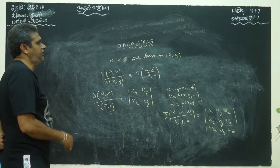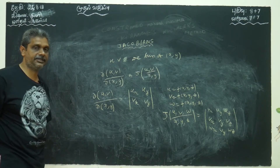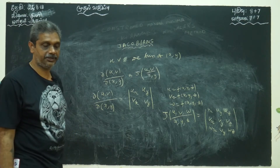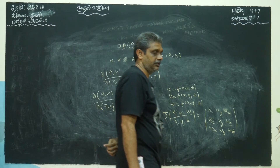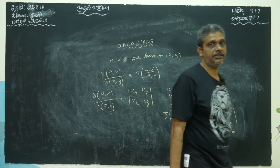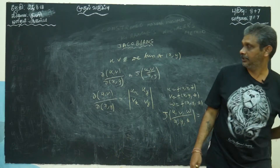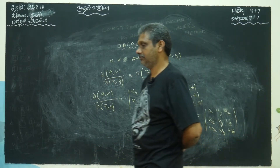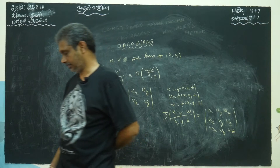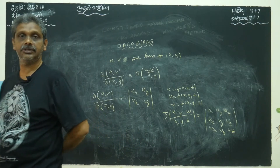Then we do some problems later. There are also some properties — three properties — which we will explain one by one. There is also functional dependence, which I will explain.